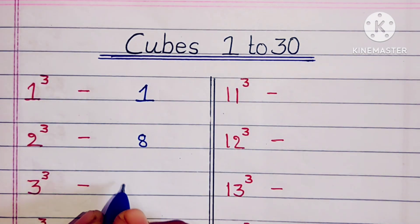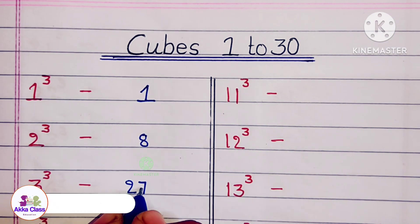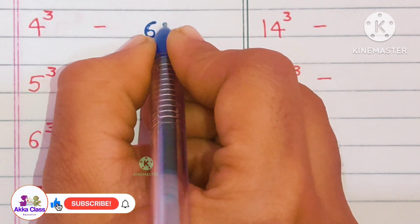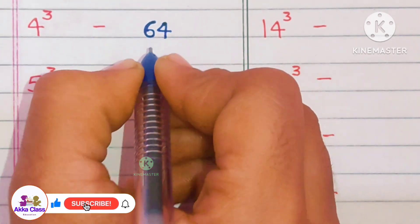1 cube is 1, 2 cube is 8, 3 cube is 27, 4 cube is 64.